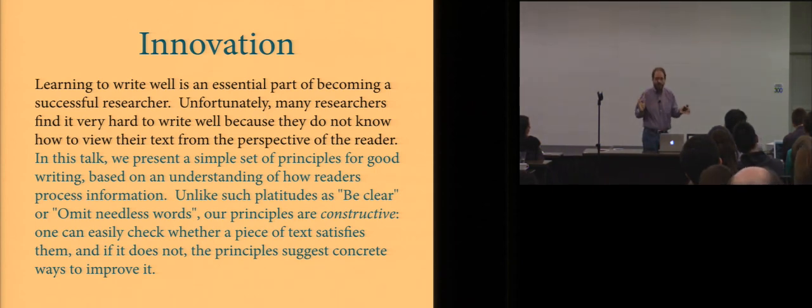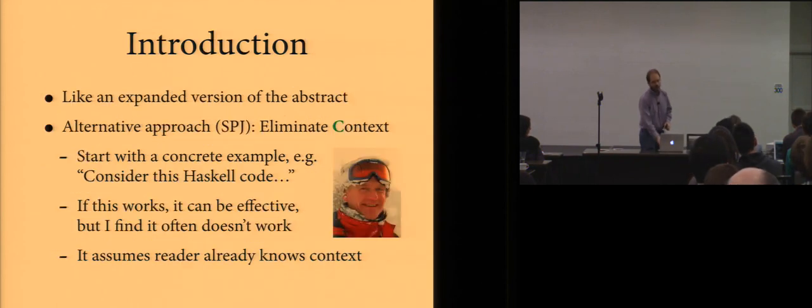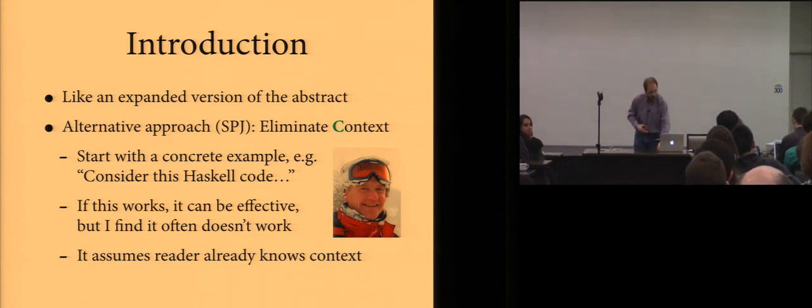So, again, this should seem like a natural thing. But many papers don't adhere to this. So, that was an example of an abstract. An introduction, as I said, I think is basically the same principle for how you set it up. However, there is disagreement about this. Simon Peyton Jones, in his talk, advocates for an alternative approach, which is basically to eliminate the context. He says, you should just start out with a concrete example. For example, consider the following Haskell code. I think if this works, it can be very effective. But I personally find it often doesn't work for the kind of papers that I write. It assumes that the reader already has some shared context with you.